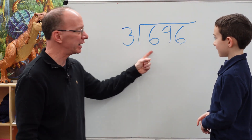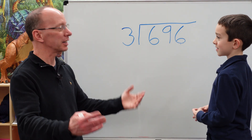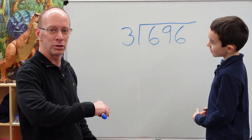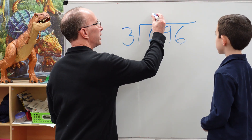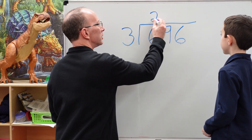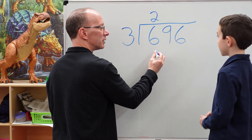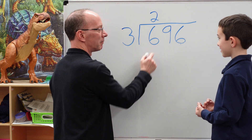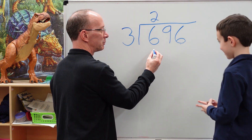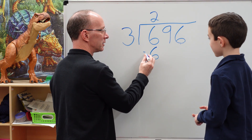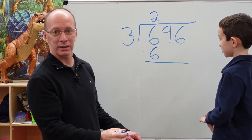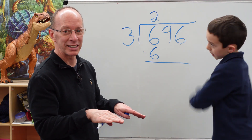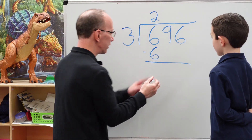Can I put 3 into 6? Yes. How many times? 2. So I put 2 right here. 2 times 3 equals 6. And we're going to subtract that. So 6 minus 6 is zero. So you don't even have to put a zero here.